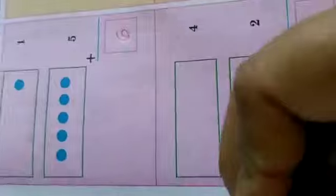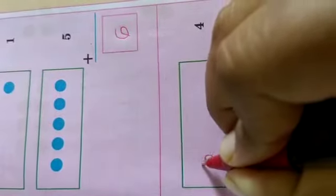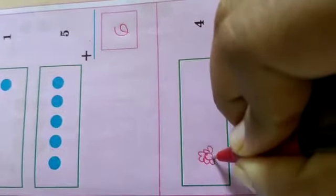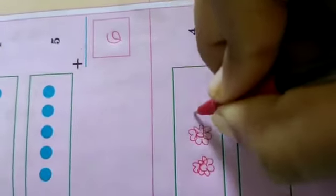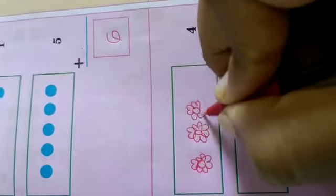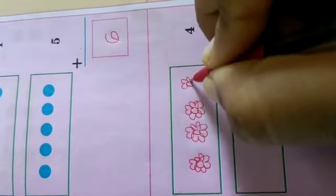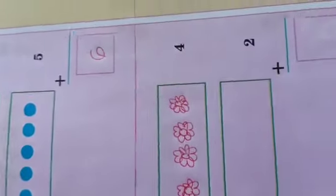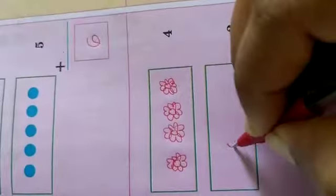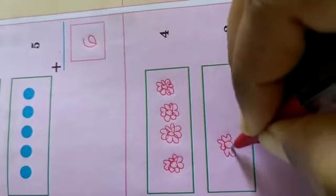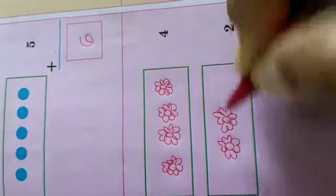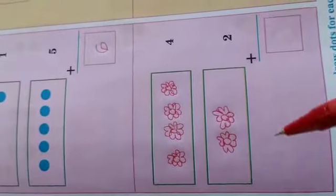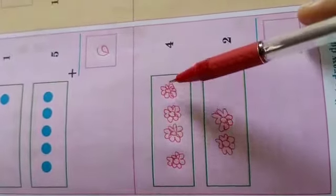6. Here 4. Suppose here I am taking flower. 1, 2, 3, 4. Here 2. How many flowers are there? Count. 1, 2, 3, 4.